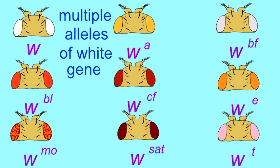Therefore, there can be a number of alleles — multiple alleles for a specific gene. This is something which Mendel did not observe.